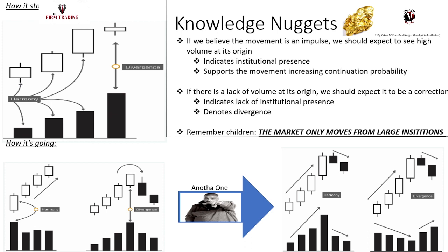That institutional presence tells us the area is significant. I'll take that trade, take two-thirds off as soon as we get back to that swing high, and leave a runner for more upside. I know we're most likely going to check the top of that structure whether it's 30, 20, or 100 points. High volume at the origin supports the movement, increases continuation probability. Trends are your friend.